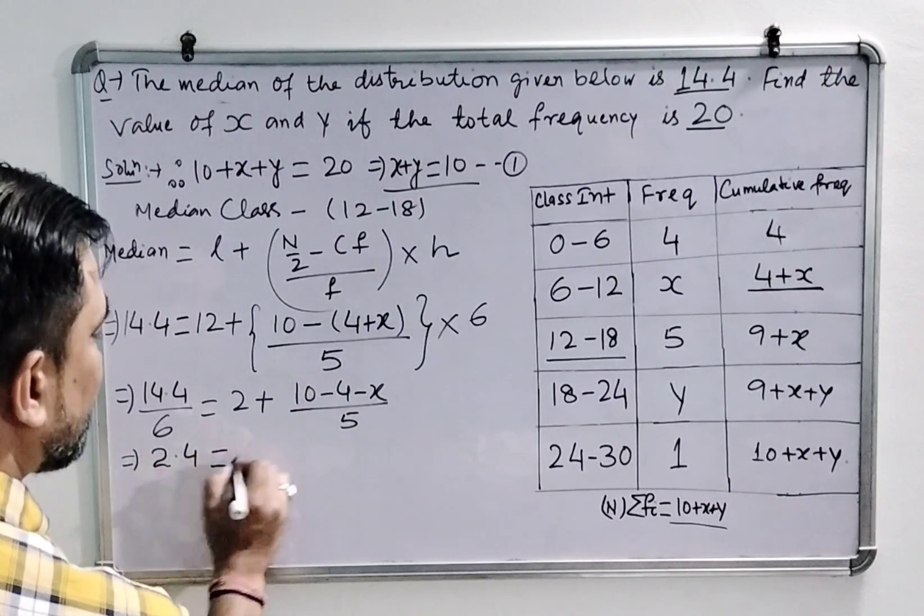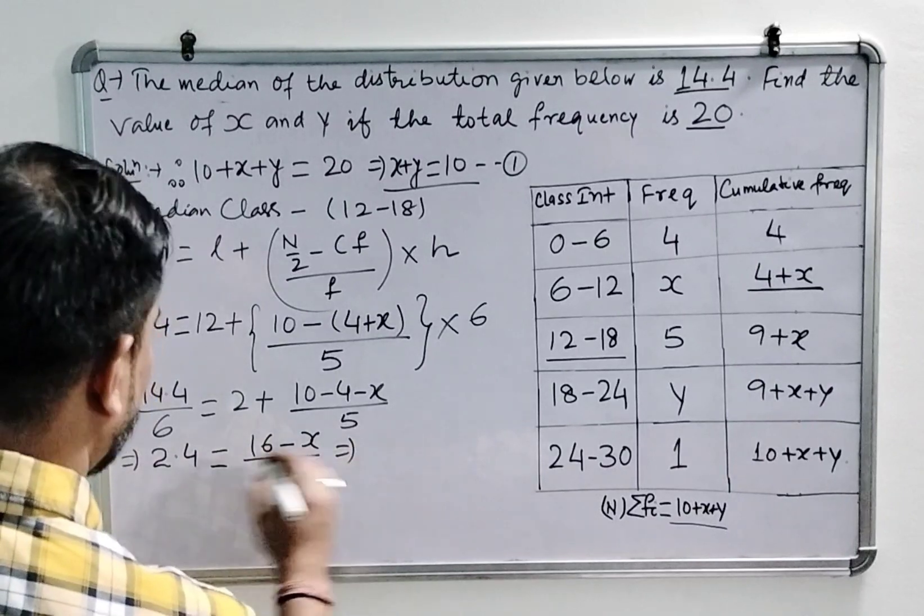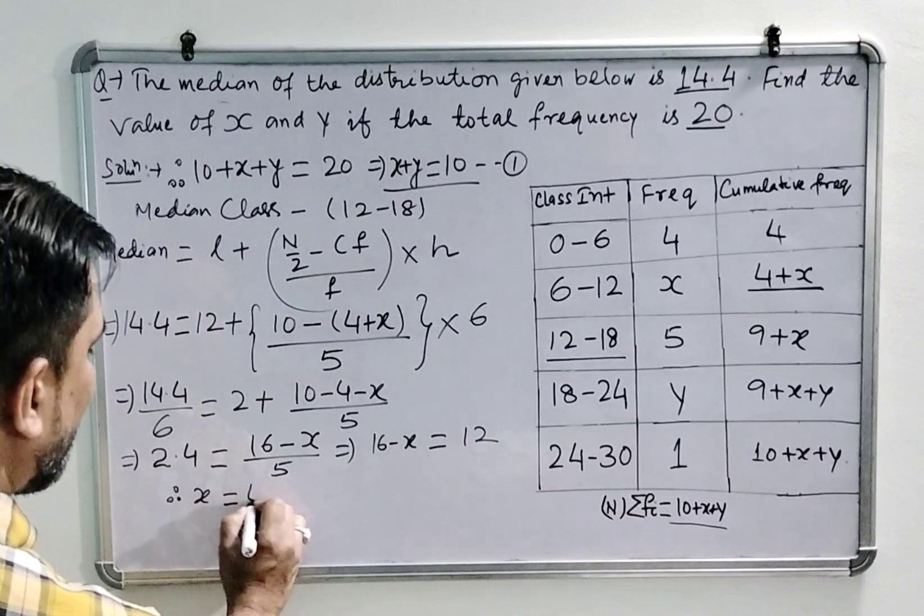So 2.4 is 16 minus x upon 5. Cross multiply it. 16 minus x is equal to 12. So the value of x will be 4.